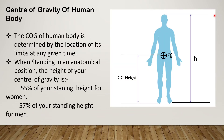The center of gravity of the human body is determined by the location of its limbs at any given time. When standing in anatomical position, the height of your center of gravity is 55% of your standing height for women and 57% of your standing height for men.